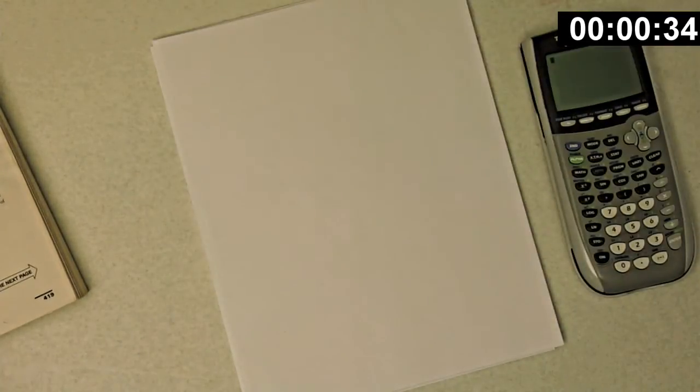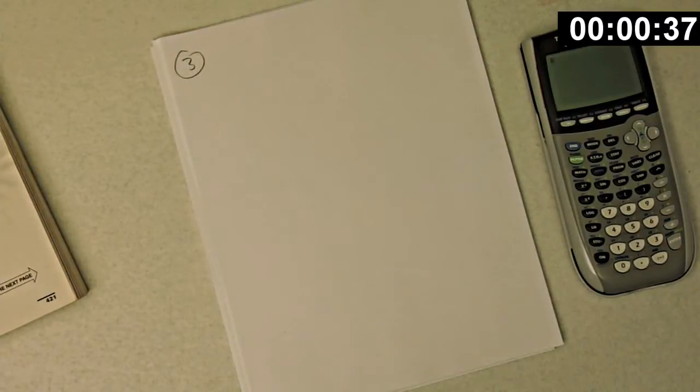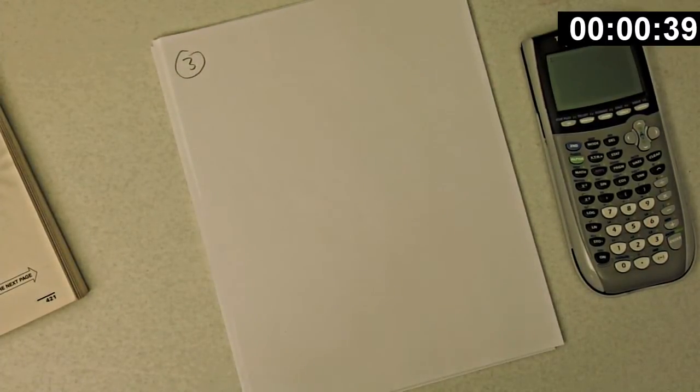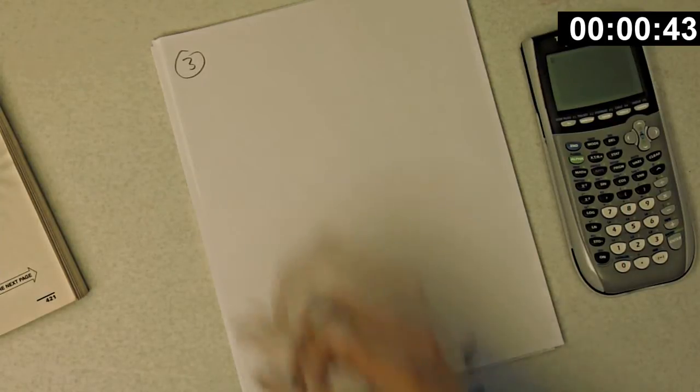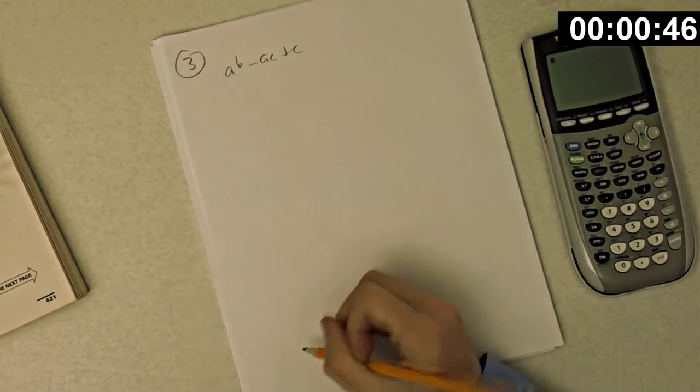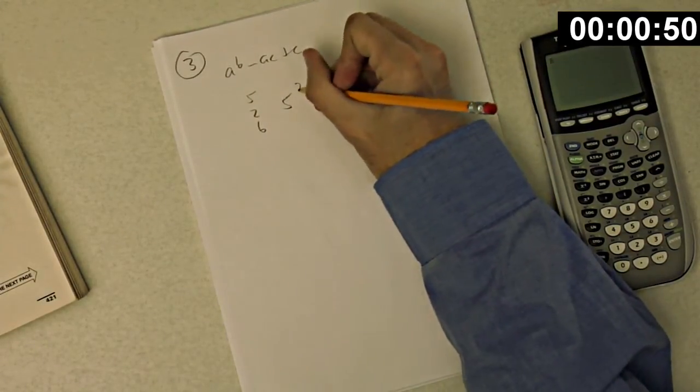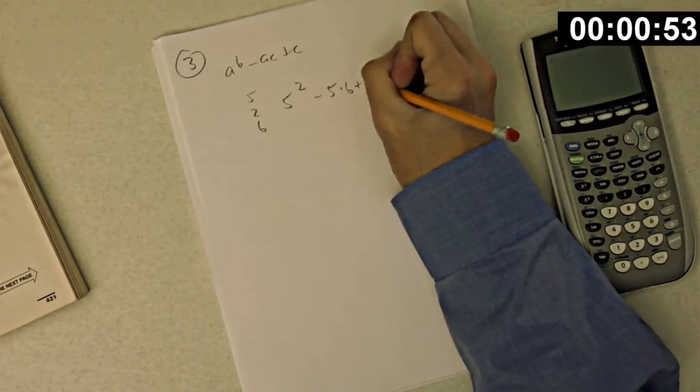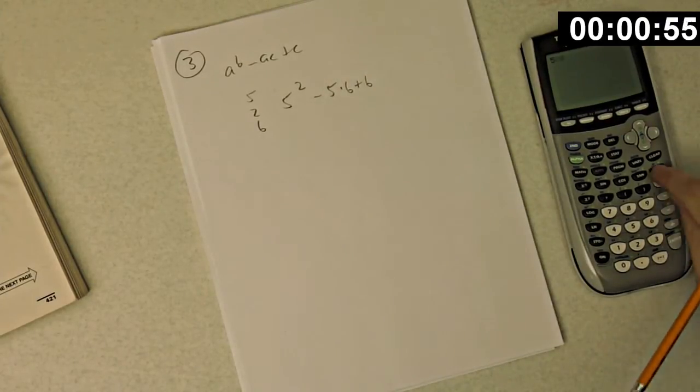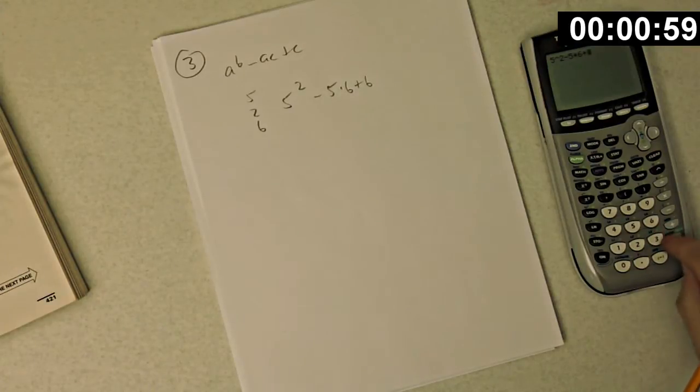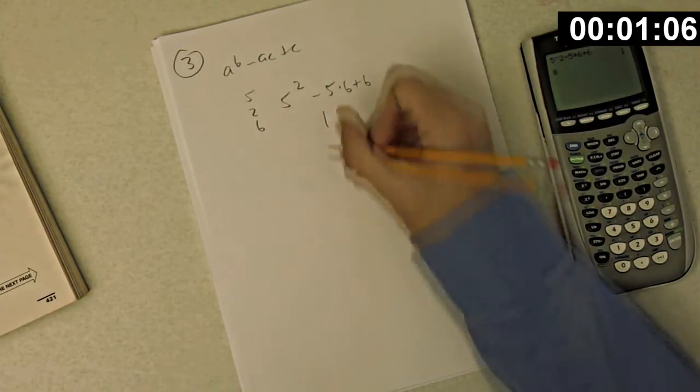Okay, number three. For positive integers A, B, and C, rectangle ABC is defined by A to the B minus AC plus C. What is the value of 5 to 6? So that's 5 to the 2 minus 5 times 6 plus 6. 5 squared minus 5 times 6 plus 6. Let's make sure that's right. 5 is 2 minus 5, yeah, that looks good. And that came out to 1, which is choice A.